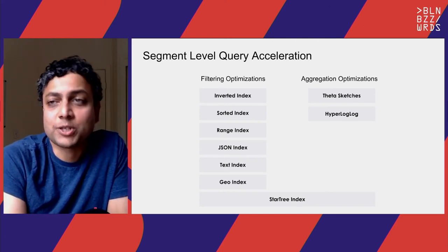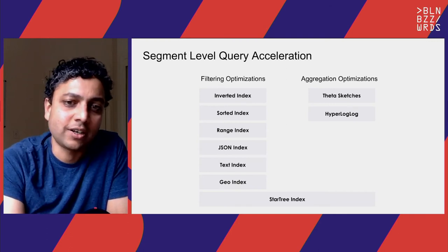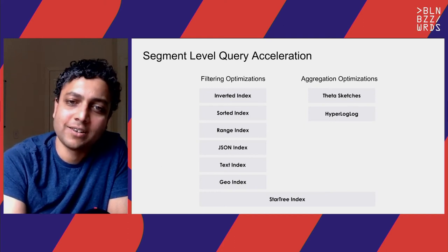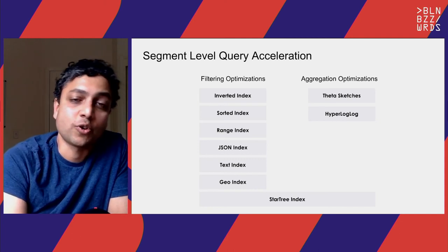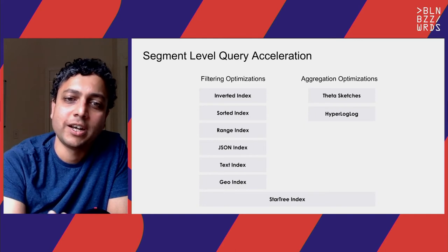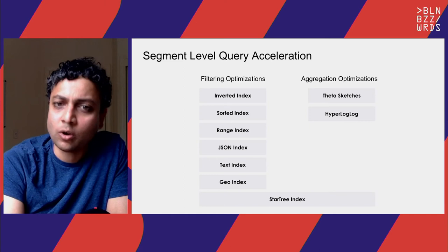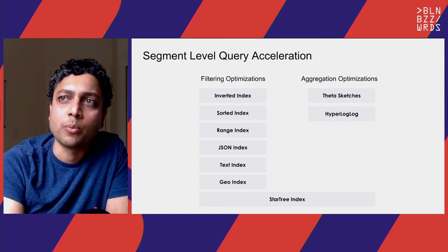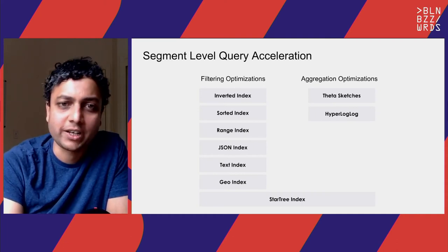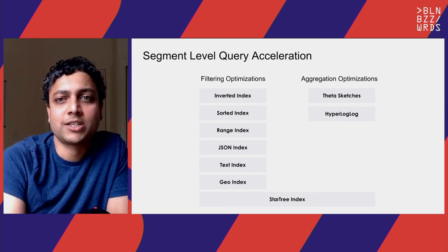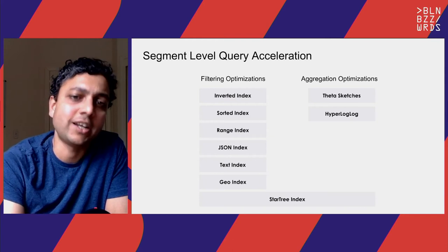Finally, Pinot has the StarTree index, which is a special index that allows you to build materialized views. You define an aggregation function and the list of dimensions used in predicates, and it pre-aggregates values for combinations of those dimensions. For queries including that function and dimensions, it often results in a simple lookup. It's also smart — it gives you the ability to tune how much to pre-aggregate vs. scan, making it very efficient. All of this combined — broker pruning, server pruning, and segment-level optimizations — makes query processing in Pinot extremely powerful, enabling extremely low latency queries and indirectly supporting high throughput.